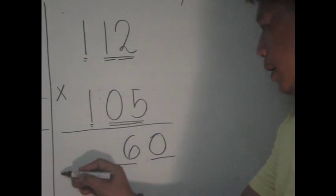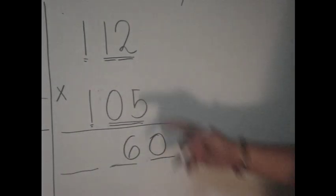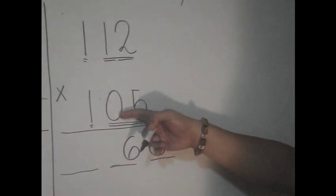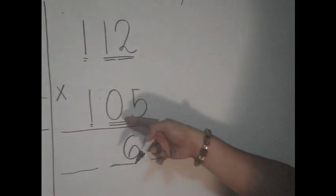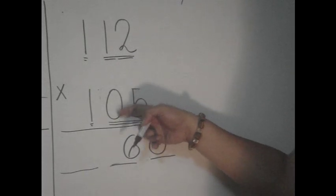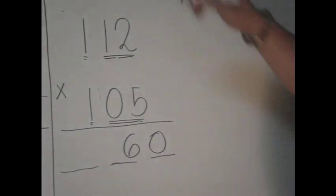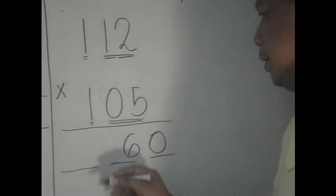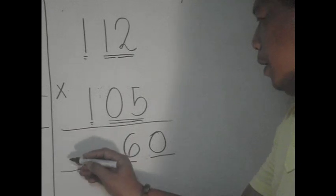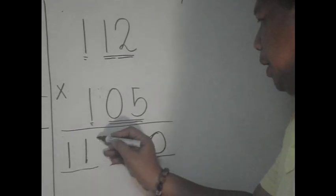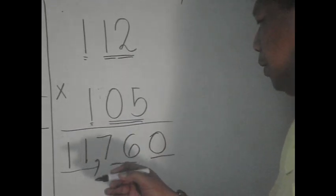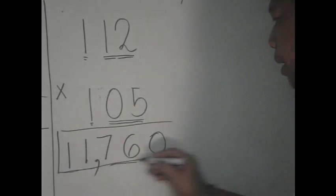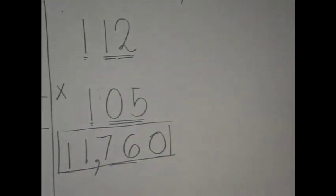And the last, after multiplying this, we have to add this with that one. Take note, 05 to be added by 112, the multiplication itself. And the answer is 117, with no carryover. Just write 117, and that will serve as our answer: 11,760.